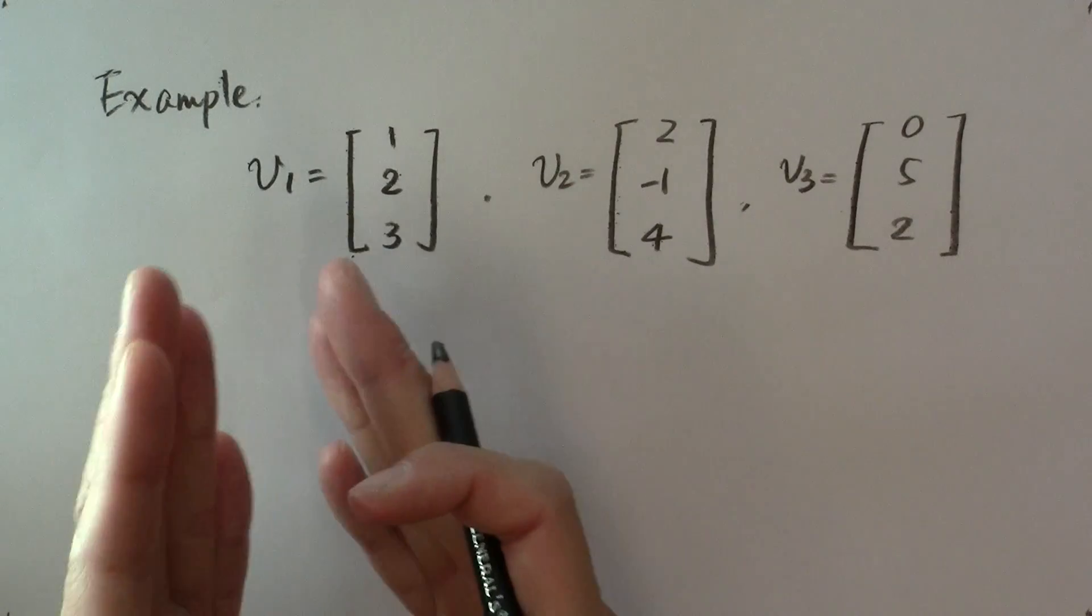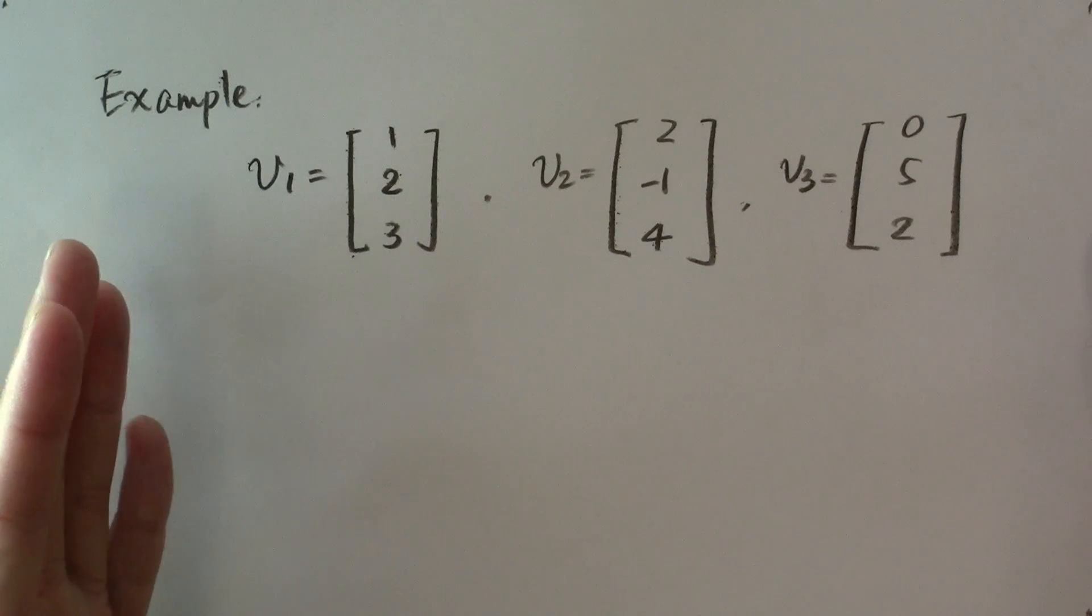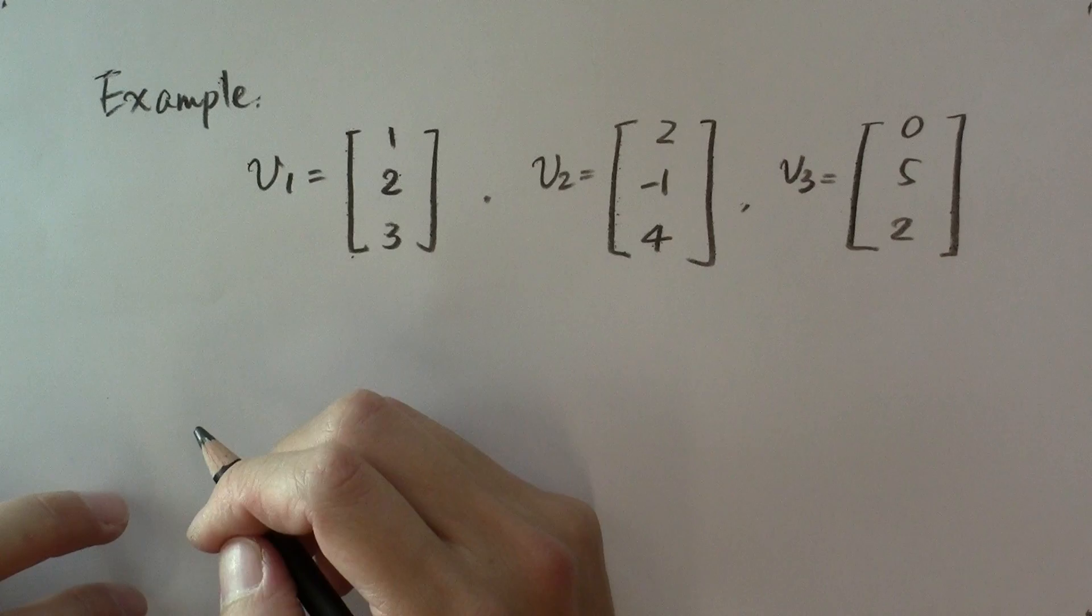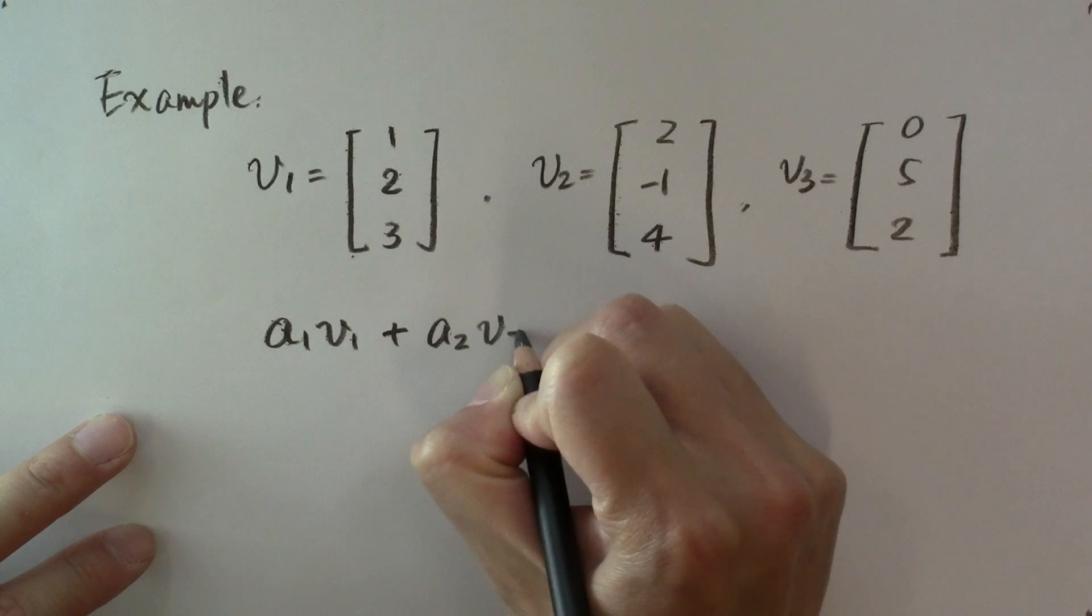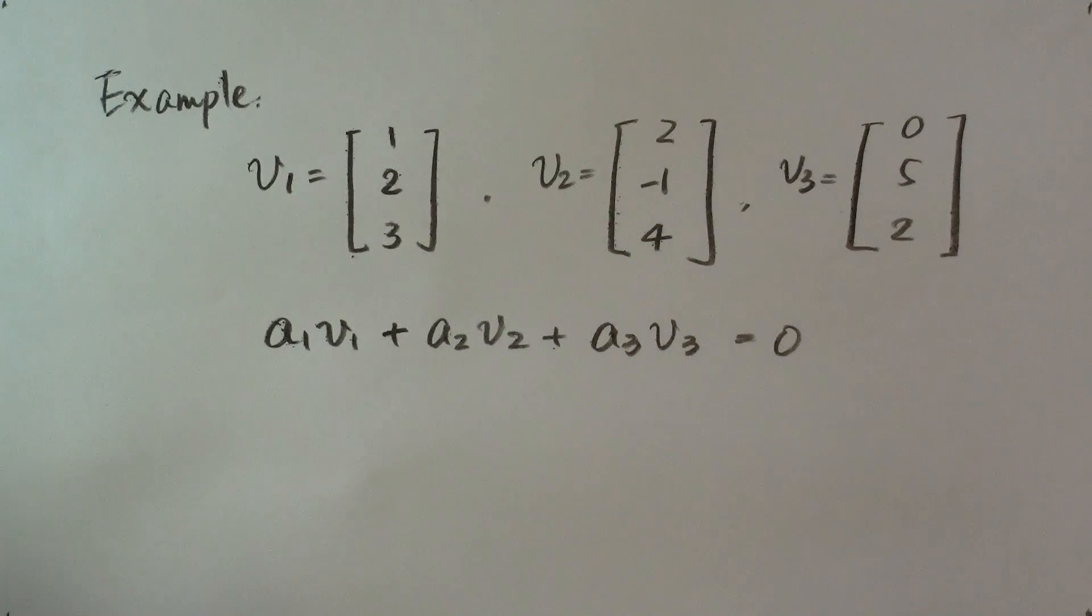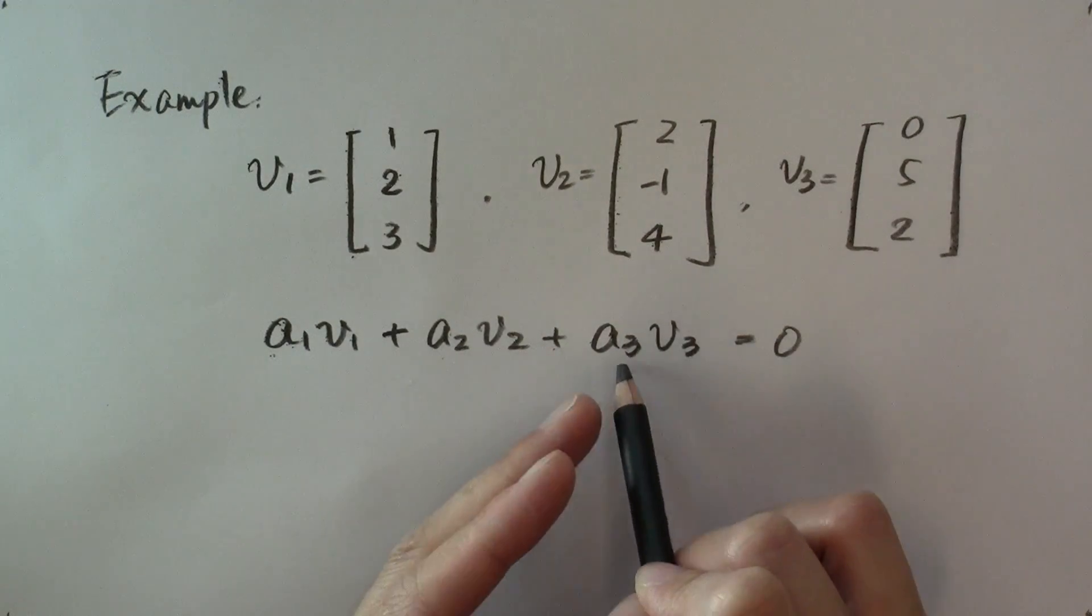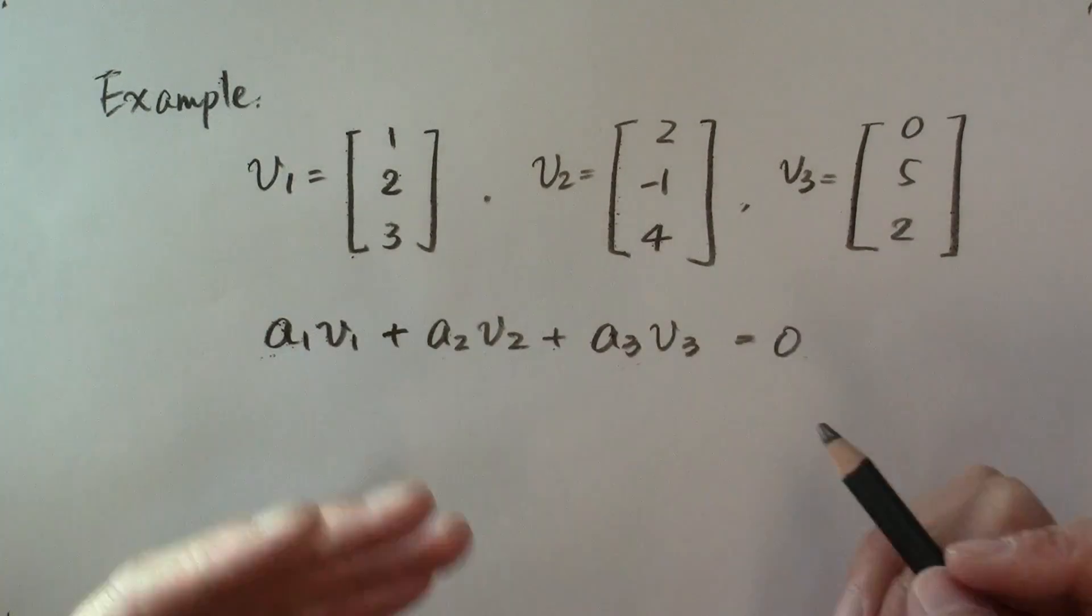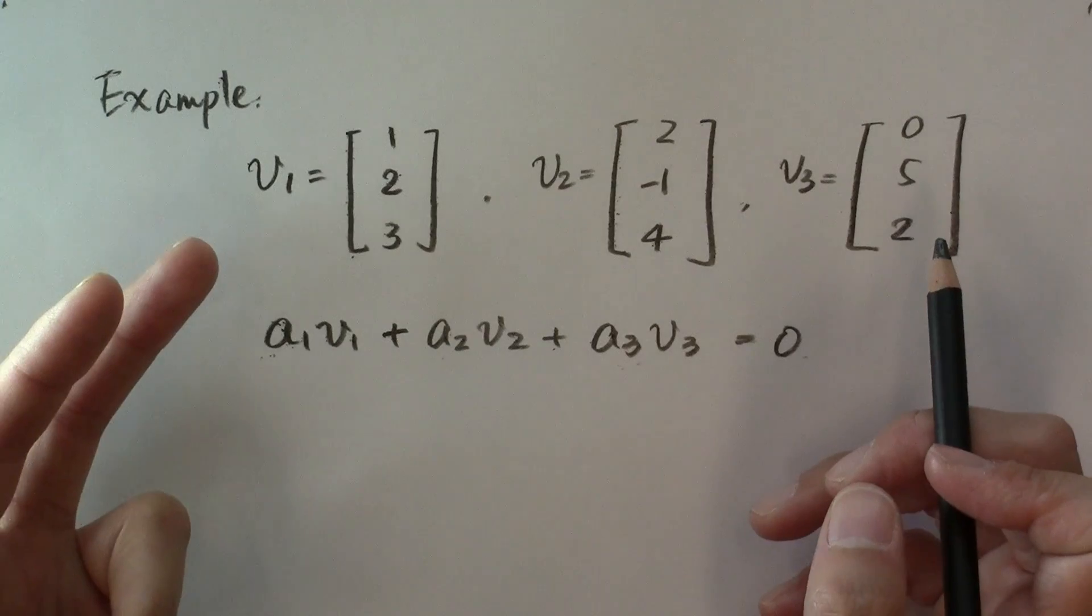Let me ask you, are these three vectors linearly independent or not? How do we go about finding the answer to that question? Well, we begin with the definition. Let's look at the equation a1 times v1 plus a2 times v2 plus a3 times v3 equal to the zero vector. If there is a set of numbers a1, a2, a3 that satisfy this equation and they are not all zeros, then this set of vectors is not linearly independent. Otherwise, it will be linearly independent.